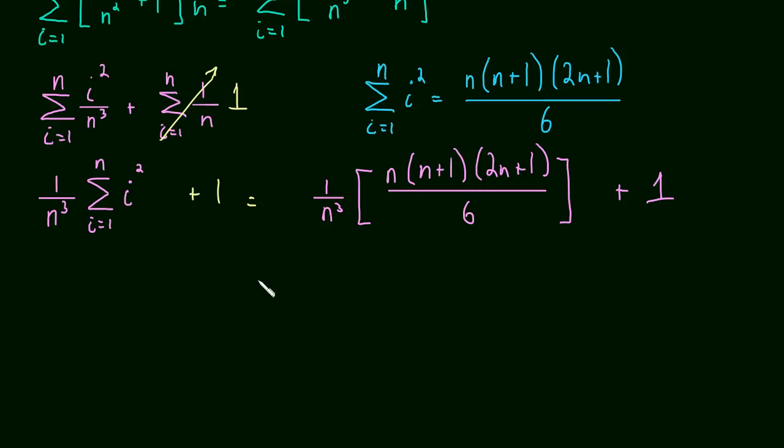But let's, if we know that the bigger the number we use, the better the estimate, why stop at a million or a trillion or a trillion trillion or anything? Why stop anywhere? Let's instead take the limit as n goes to infinity.